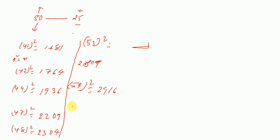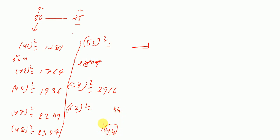Now there are more questions. For 62 squared: 62 is 12 more than 50. Twelve squared is 144 — we write the last 2 digits as 44, and carry 1. Add 12 to 25, giving 37, plus the carry of 1 equals 38. So 62² = 3844.